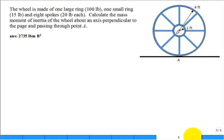This is a wheel with some spokes. It has a large ring, the outer ring looks like it's 100 pounds, and one small inner ring, that's this part right here, and that's 15 pounds, and it has eight spokes. Each of them are 20 pounds.